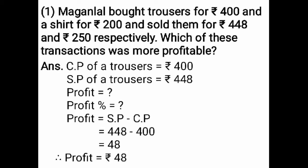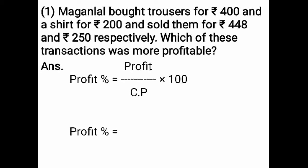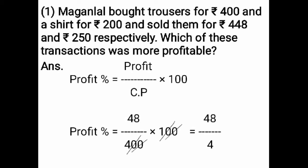After finding the profit of the trousers, you have to find the profit percent. The formula for profit percent is profit upon cost price multiplied by 100. Substitute the values: 48 upon 400, multiplied by 100. Cancel both zeros on numerator and denominator, giving 48 upon 4. Dividing 48 by 4 equals 12%.